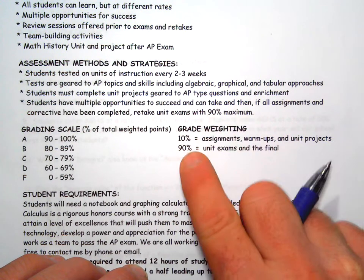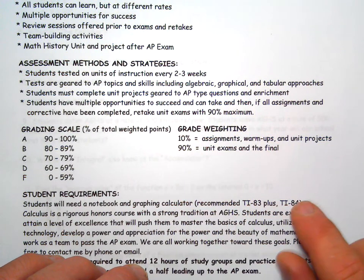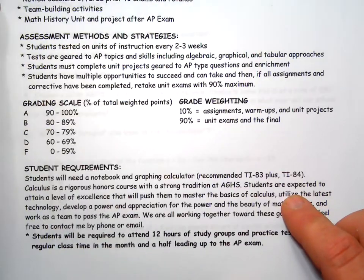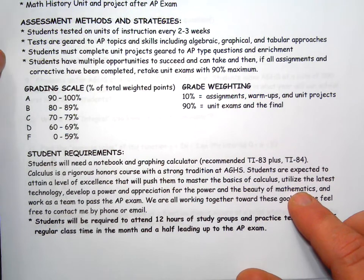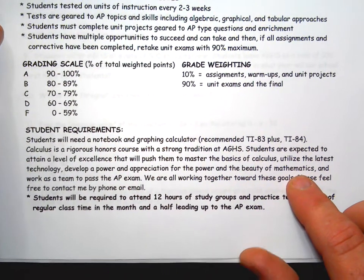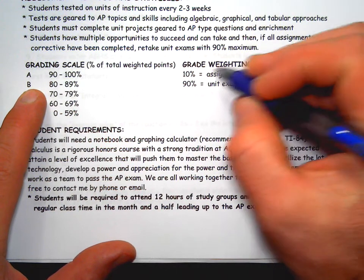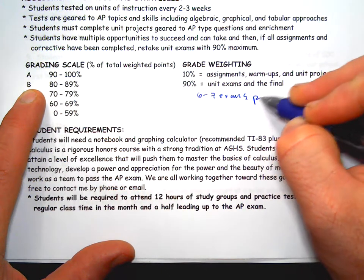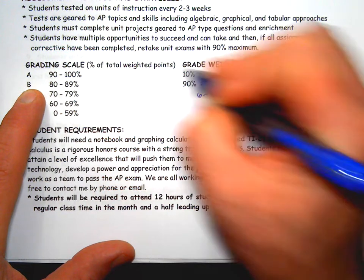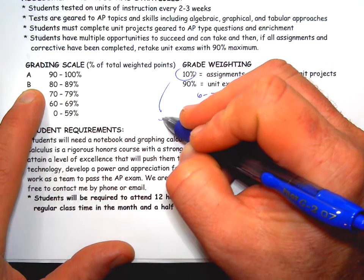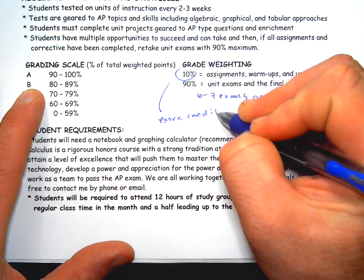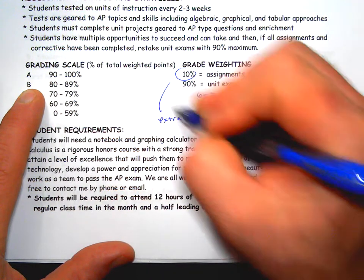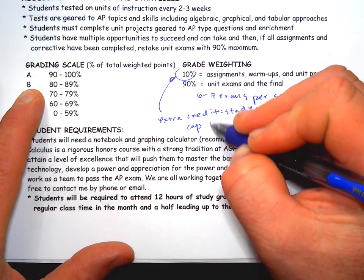Grading: a simple weighted system — 90% for unit exams, so that 90% maximum on retests is critical for your score. 10% for everything else: projects, quizzes, warm-ups, and assignments. In a regular college course your tests could be 100% of your grade, but I think 90% is pretty good. We'll have six to seven exams per semester. The 10% participation category also has extra credit — just for going to study groups, office hours, or tutoring. Show up and I'll give you extra credit, with a cap of 105% in that category.